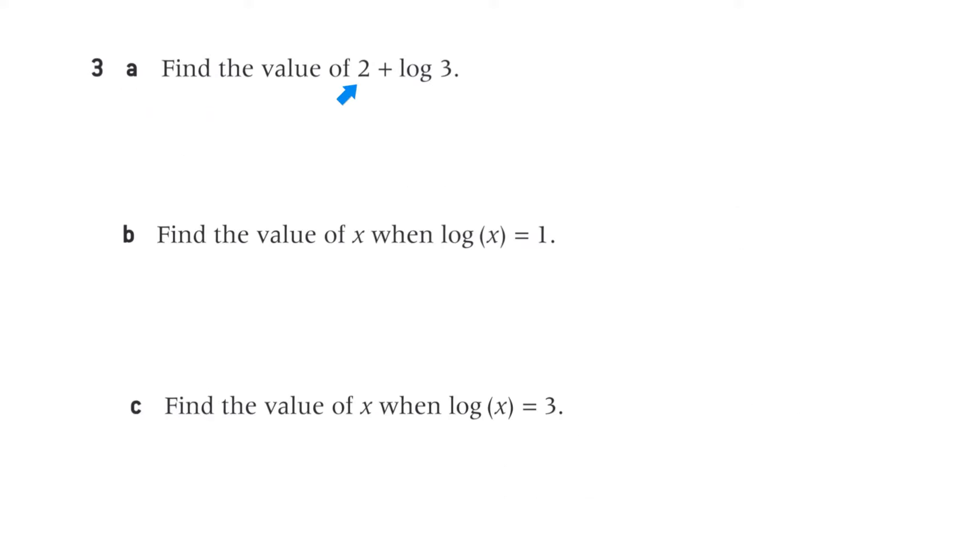Question 3, part a, find the value of 2 plus log 3. We'll just use the calculator, and we've got 2 plus, and with the calculator, log base 10 of 3. So we've got 2 plus log 3, equals 2 plus 0.477, and that's 2.477, or 2.48 to 3 significant figures.